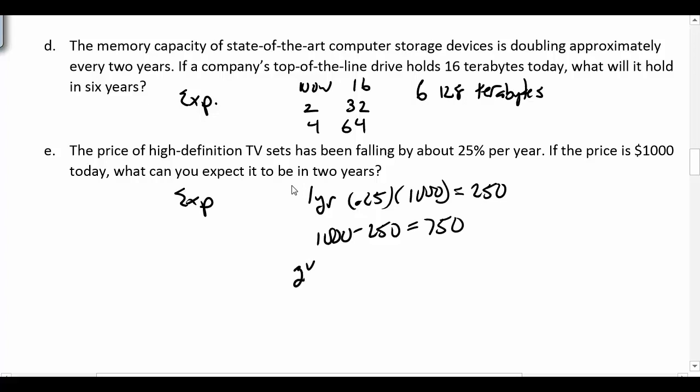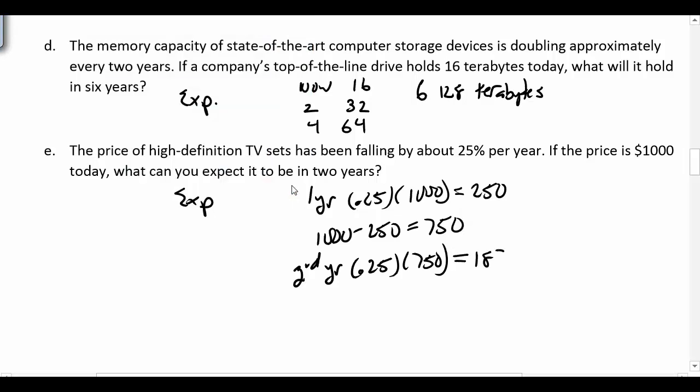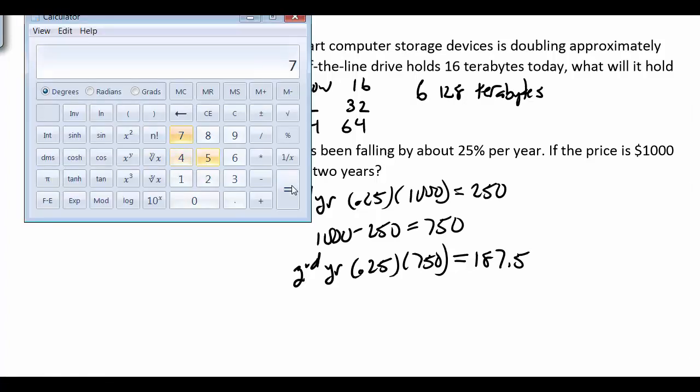The second year, it's going to go down another 25%. So 25% times the $750. That would be worth typing in the calculator. So 0.25 times $750, and I get $187.50. But I want to subtract that. So I want $750 minus the $187.50, and it puts it at $562.50.